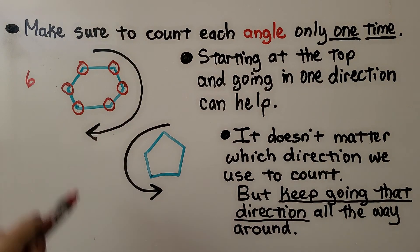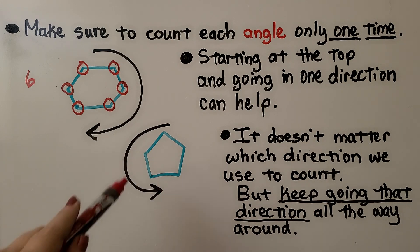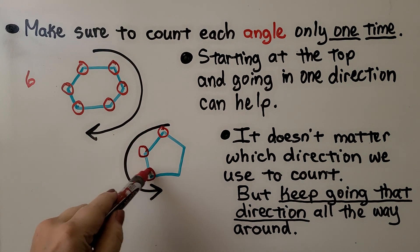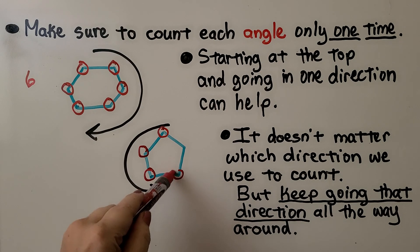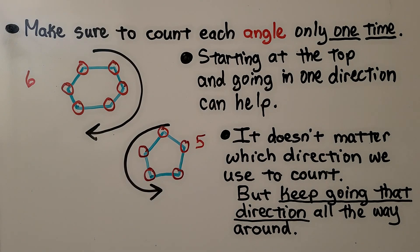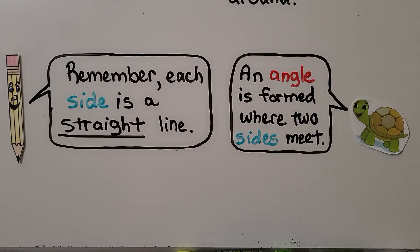We can go the other way, as long as we keep going in the same direction once we start. One, two, three, four, five. This one has five angles. Remember, each side is a straight line, and an angle is formed where two sides meet.